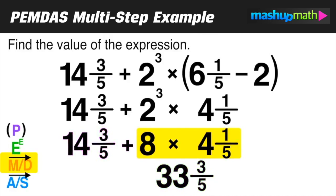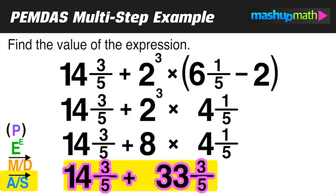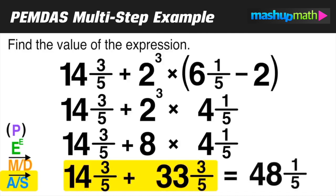Now we have that product, and the remaining terms we can slide down. We're ready for our final step of the order of operations, which is addition or subtraction, going from left to right. This is our last operation; we just have to add these two terms together. 14 3/5 plus 33 3/5 equals 48 1/5.